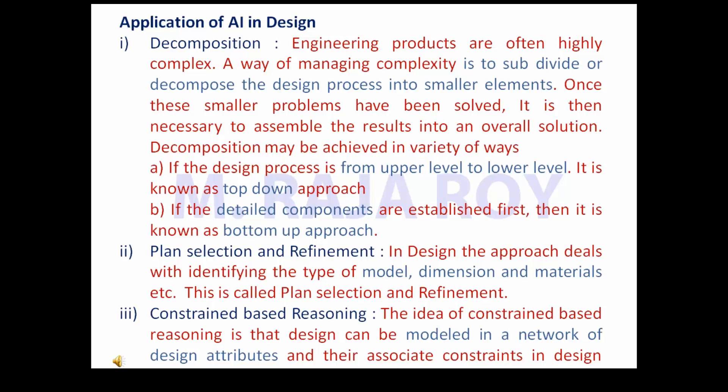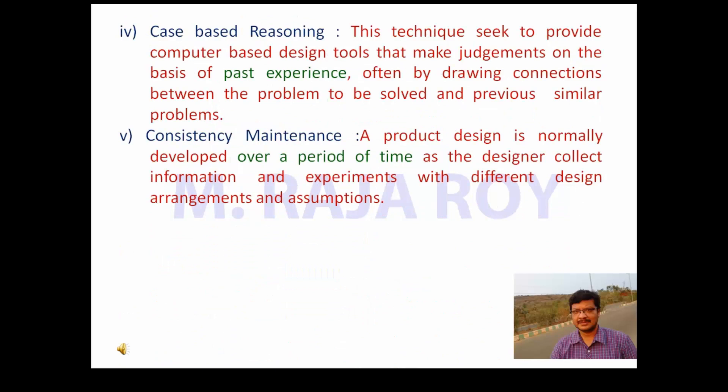Plan selection and refinement: In design, this approach deals with identifying the type of model, dimension, and materials, etc. This is called plan selection and refinement. Constrained-based reasoning: The idea is that design can be modeled in a network of design attributes and their associated constraints in design and manufacturing. Case-based reasoning: This technique seeks to provide computer-based design tools that make judgments on the basis of past experience, often by drawing connections between the problem to be solved and previous similar problems. Consistency maintenance: Product design is normally developed over a period of time as the designer collects information and experiments with different design arrangements and assumptions.